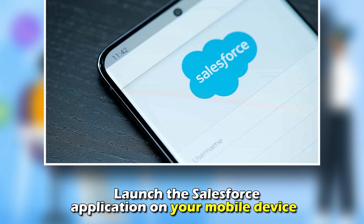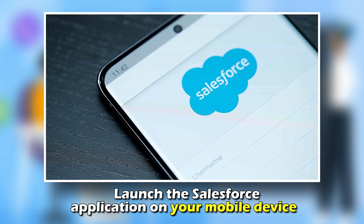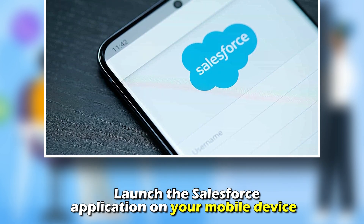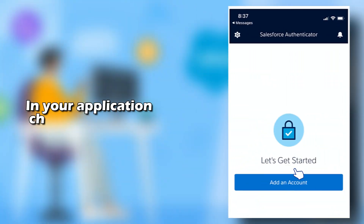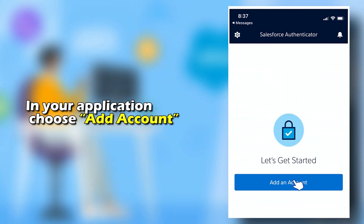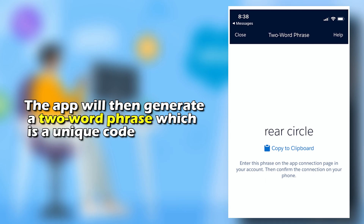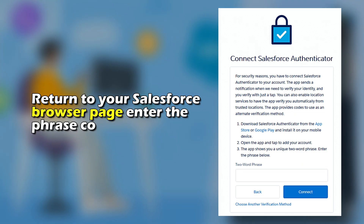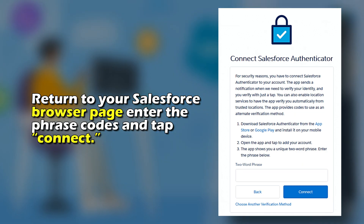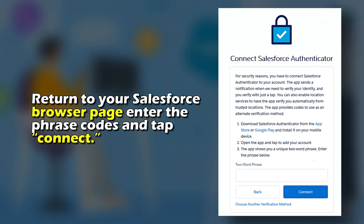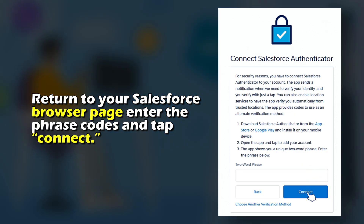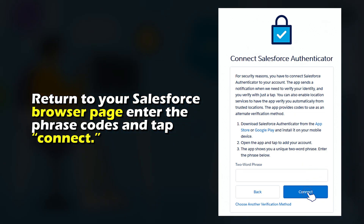Now launch the Salesforce application on your mobile device. In your application, choose add account. The app will then generate a two-word phrase, which is a unique code. Return to your Salesforce browser page, enter the phrase code, and tap connect.